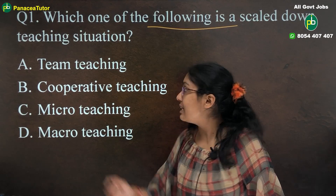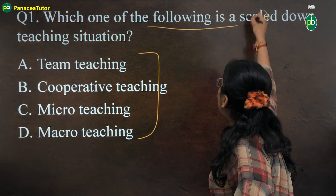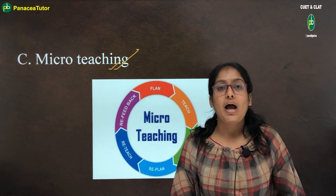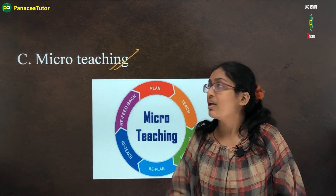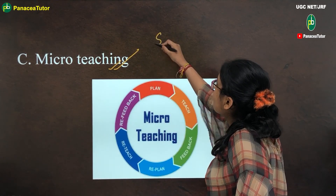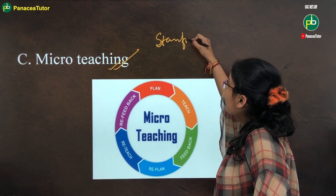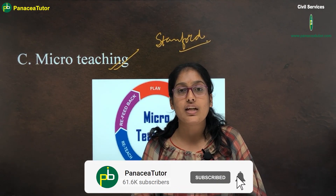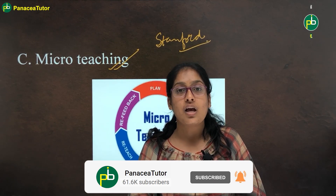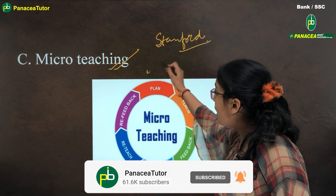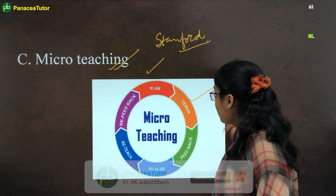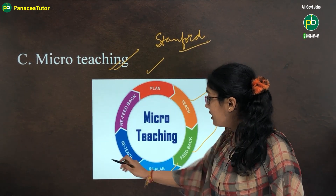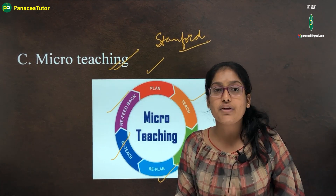The answer is option C, that is micro teaching. Micro teaching is a scaled-down method. This concept was given by Stanford University. Micro teaching is a teacher training situation for learning teaching skills. Its process starts with plan, then teach, then feedback and observe, then replan, then reteach, and last is re-feedback and re-observe.